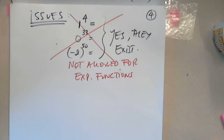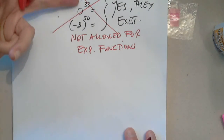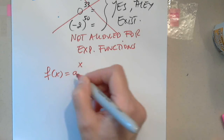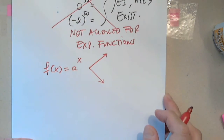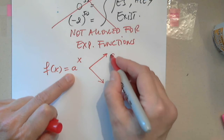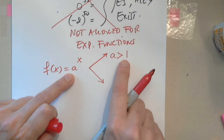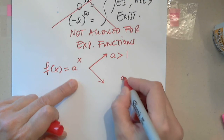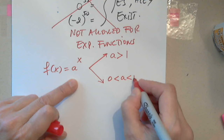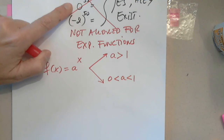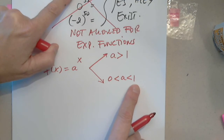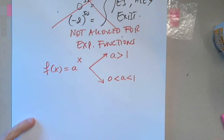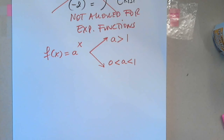So what is allowed? For f(x) = a^x, we have only two options. One option where the base is a number greater than 1 — but not 1. And the other option where the base is a tiny number between 0 and 1, because it cannot be negative, and it cannot be 0 or 1.